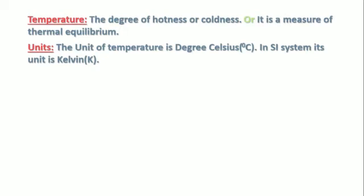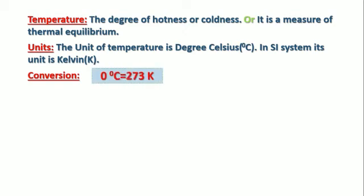The next topic is temperature: the degree of hotness or coldness, or a measure of thermal equilibrium. The unit of temperature is degree Celsius (°C), and in the SI system its unit is Kelvin (K). There is a relation: 0°C equals 273 K. Temperature in Kelvin equals 273 plus temperature in degree Celsius.